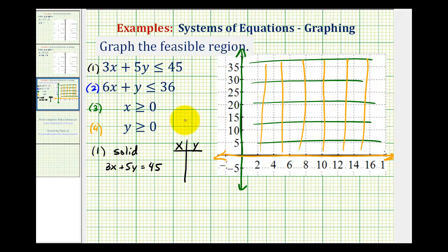So to determine the y-intercept, we'll set x equal to zero and solve for y. And then to determine the x-intercept, we'll set y equal to zero and solve for x. Notice if x is equal to zero, we would have 5y equals 45. Divide both sides by five, and we have y equals nine. And then when y is equal to zero, we would just have 3x equals 45. Divide both sides by three, and we have x equals 15.